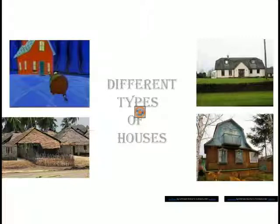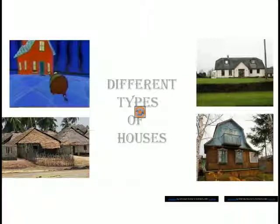Today we'll discuss a new chapter, lesson number seven of EVS — that is different types of houses. I'm sure you all must be very excited. Let's start the lesson with this lovely rhyme.